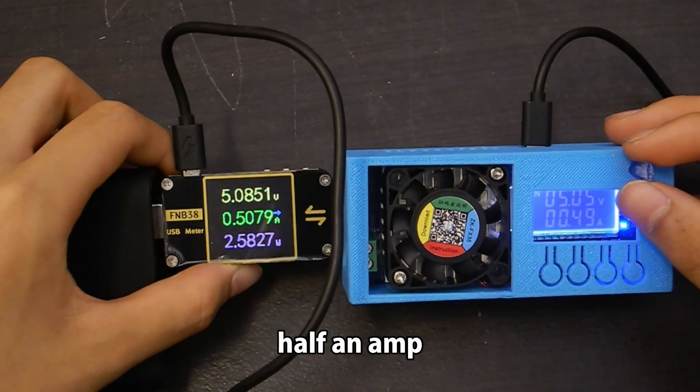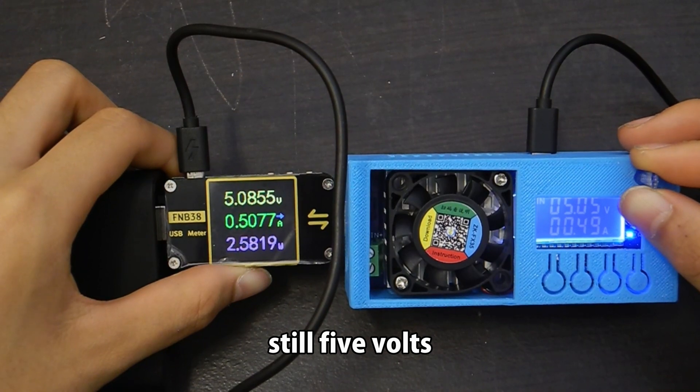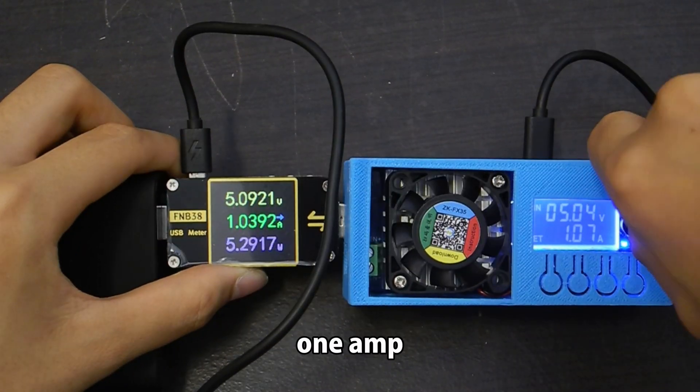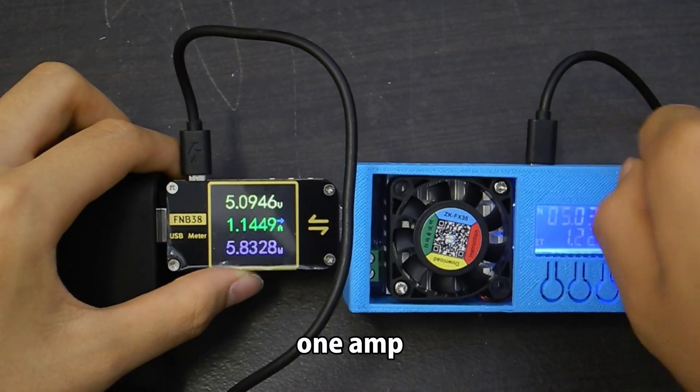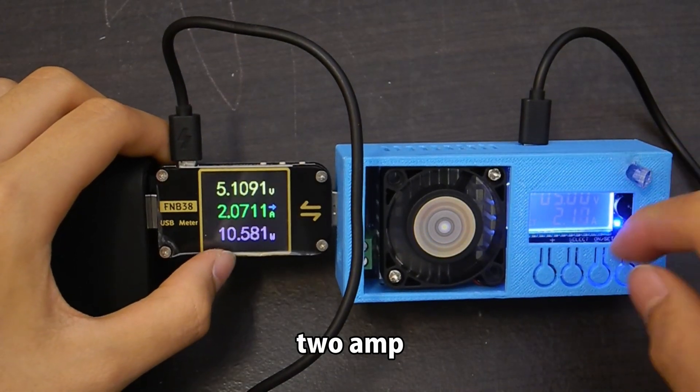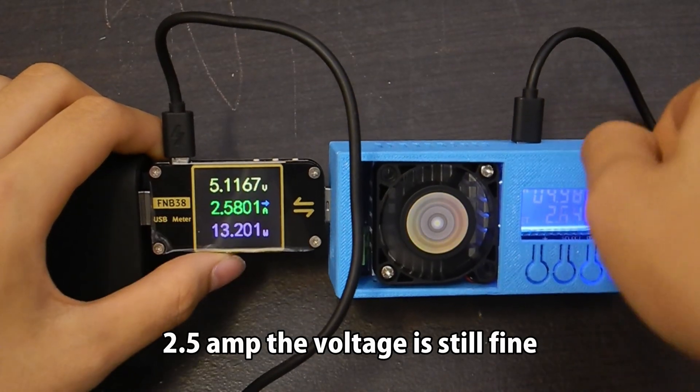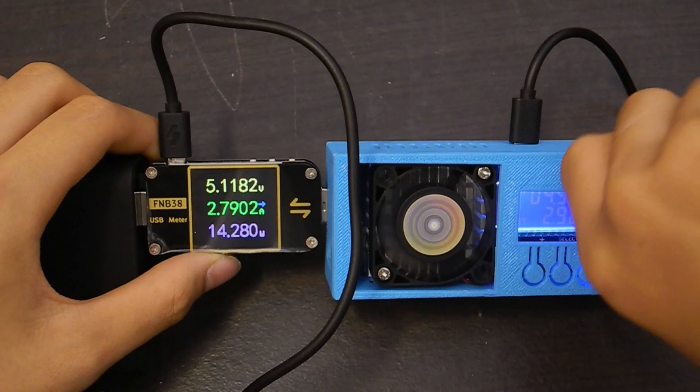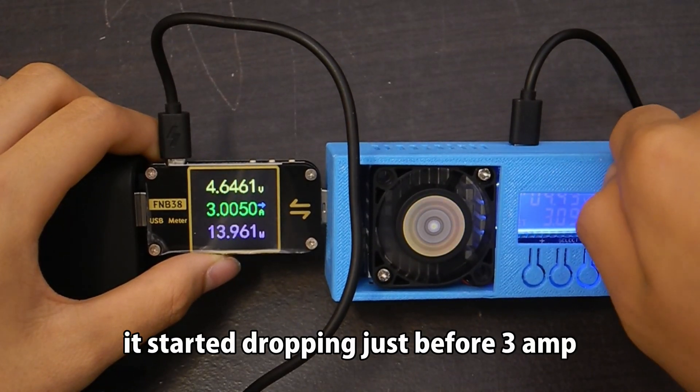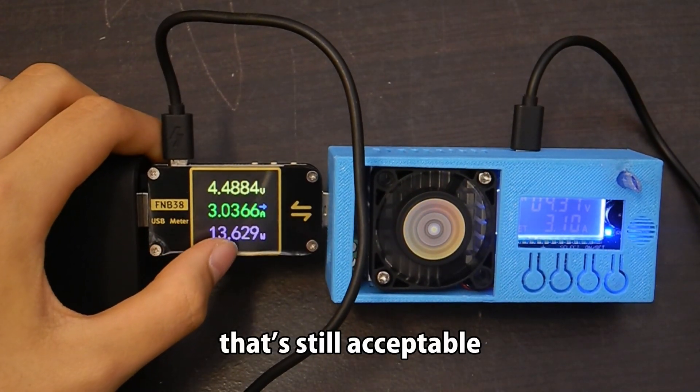Half an amp. Still 5V. 1A. 2A. 2.5A voltage is still fine. It started dropping just before 3A. That's still acceptable.